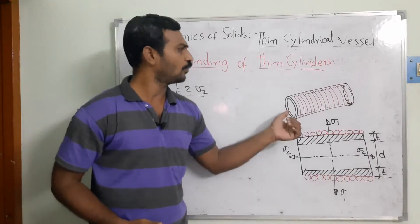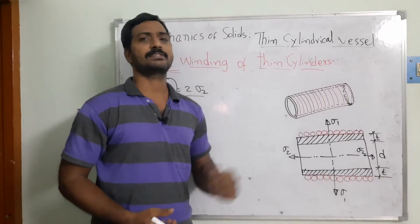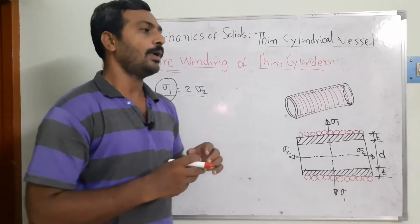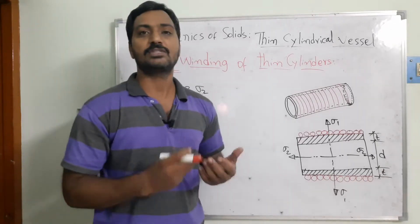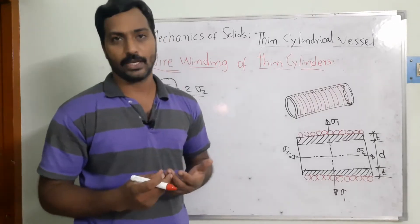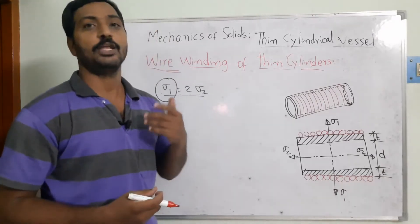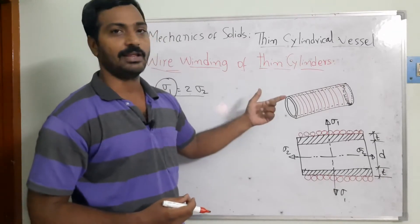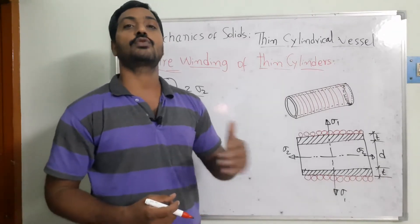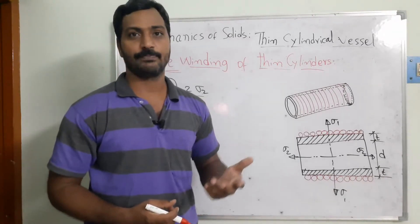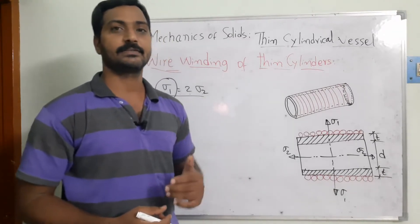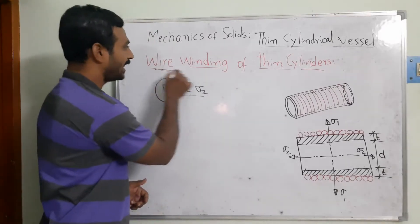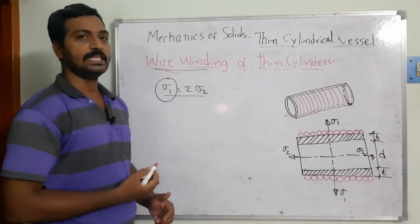So if you want to store more fluid inside cylindrical vessels, certain methods are required to improve the strength of the material so that it can store more energy. In this case, we are adopting the wire winding method.